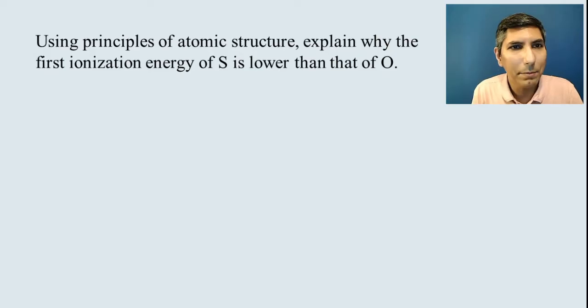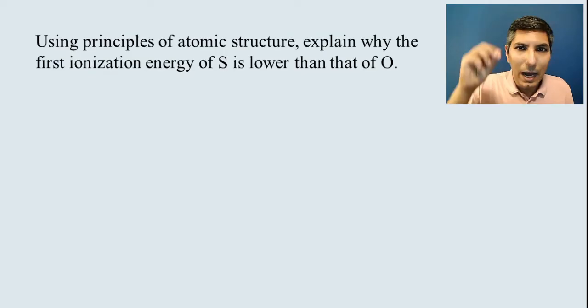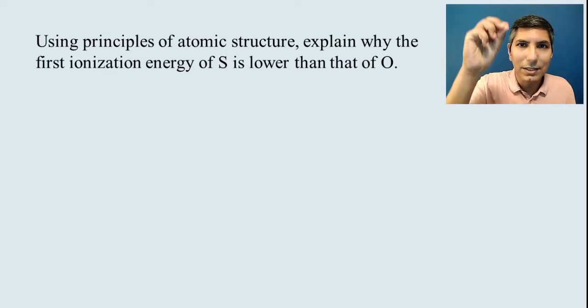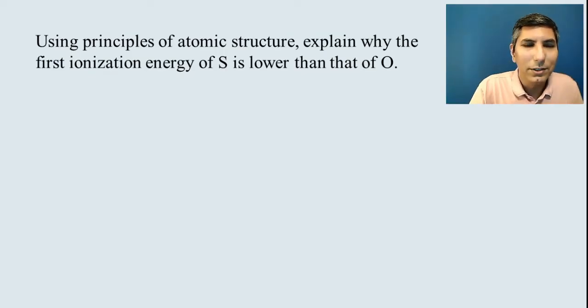So let's wrap it up here by answering this question. Using principles of atomic structure, explain why the first ionization energy of sulfur is lower than that of oxygen. So if you take out your periodic table, you'll see that oxygen is higher up on the table. Sulfur is just underneath it. So you want to talk about this in terms of occupied energy levels and electron distance. So that's going to be the reasoning.